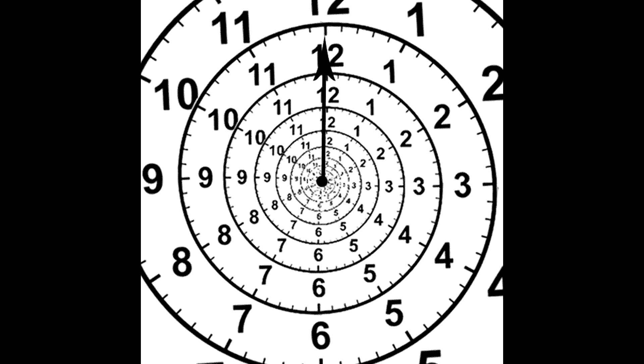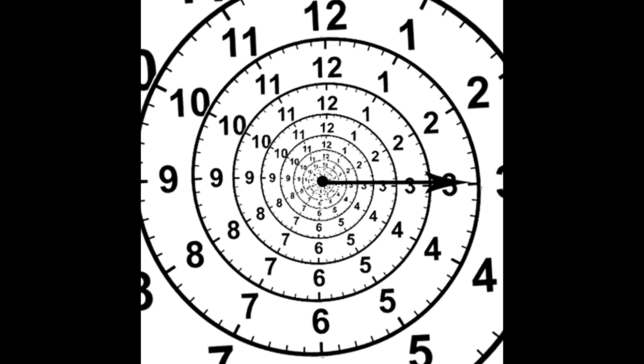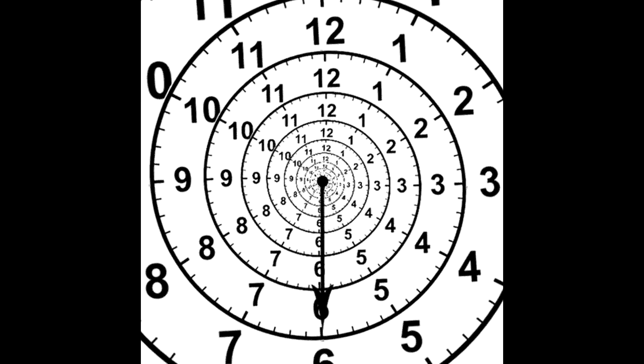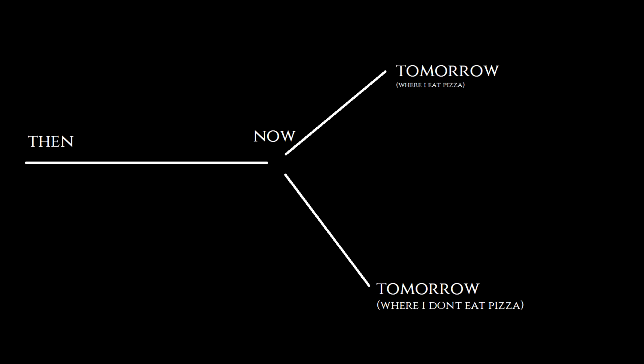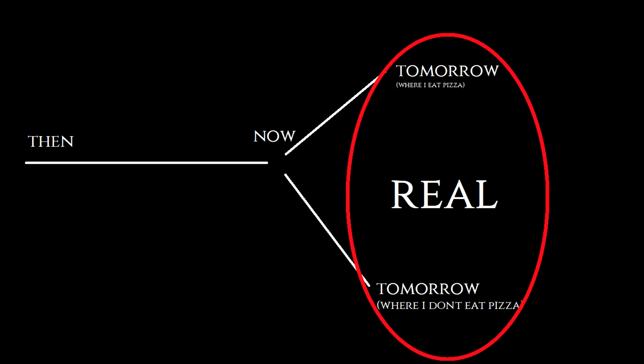To put it in simpler words you might understand: as we go through time there are many possible outcomes for us, and while waiting for the future to happen, every possible future is real.